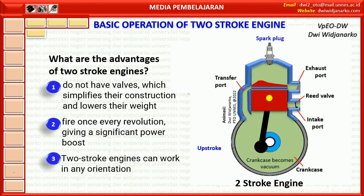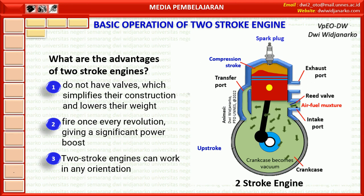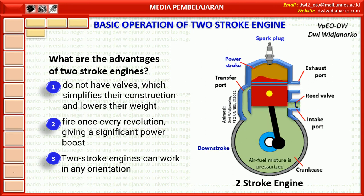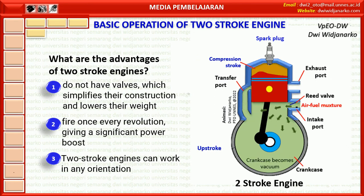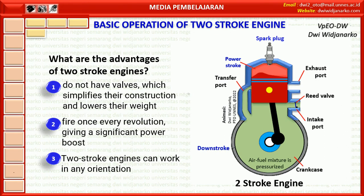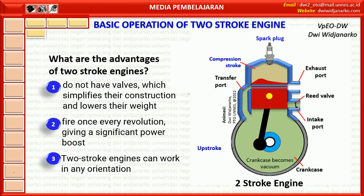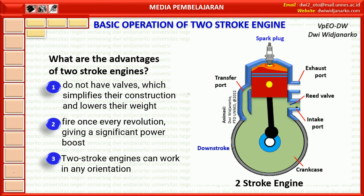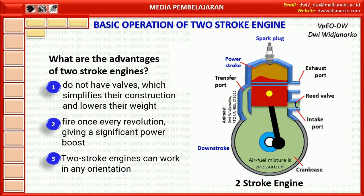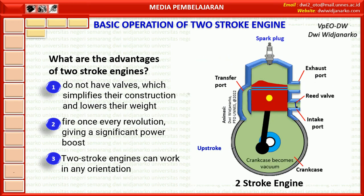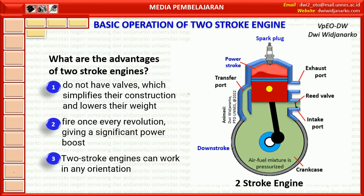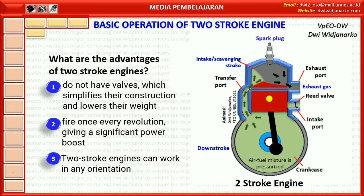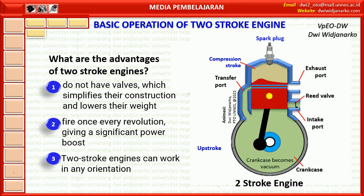Third, two-stroke engines can work in any orientation, which can be important in something like a chainsaw. A standard four-stroke engine may have problems with oil flow unless it is upright, and solving this problem can add complexity to the engine. These advantages make two-stroke engines lighter, simpler, and less expensive to manufacture. Two-stroke engines also have the potential to pack about twice the power into the same space, giving them a great power-to-weight ratio compared to many four-stroke engine designs.